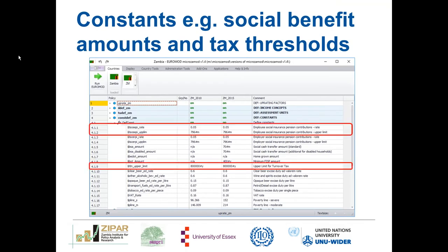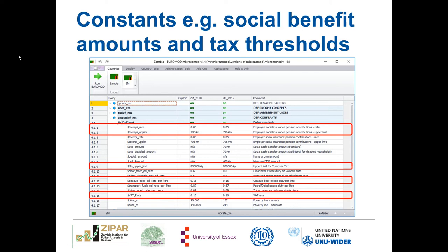Here we have some examples of constants: the employee and employer social insurance pension contributions, with the rate and the upper limit. We have the upper limit for turnover tax which is 800,000 Zambian kwacha per year, the OPEC beer excise duty per liter rate, and the VAT rate which is 16%.